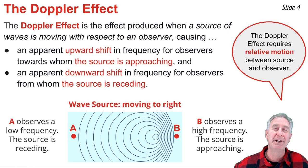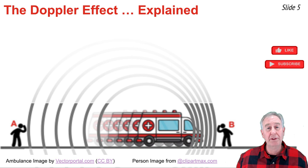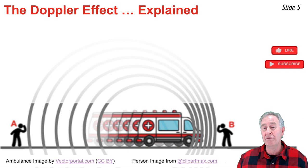Let's suppose that we have an ambulance speeding down the highway with its siren on, and two observers who are stationary on the sidewalk. Because the ambulance is moving away from observer A, observer A hears the sound of the siren at a lower pitch or frequency. And because the ambulance is approaching observer B, observer B hears the sound of the siren at a higher pitch or frequency. This is the Doppler effect.